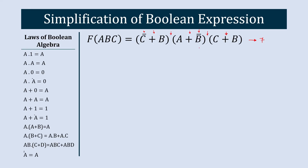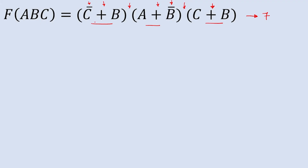Now let's start the solution. We have three terms total. To simplify, we multiply two of the terms. We'll choose to multiply (C plus B) and (C-bar plus B) because they share common terms that can be simplified further. In step one we multiply these two terms.